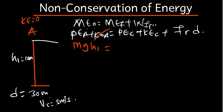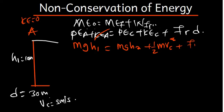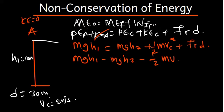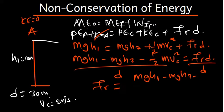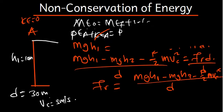At point A, the object started from rest so kinetic energy is zero. At point C, we do have potential energy. Our simplified formula becomes: MGH1 equals MGH2 plus half MV_C squared plus friction force times distance. We can rearrange so that friction force equals MGH1 minus MGH2 minus half MV_C squared, all divided by D.